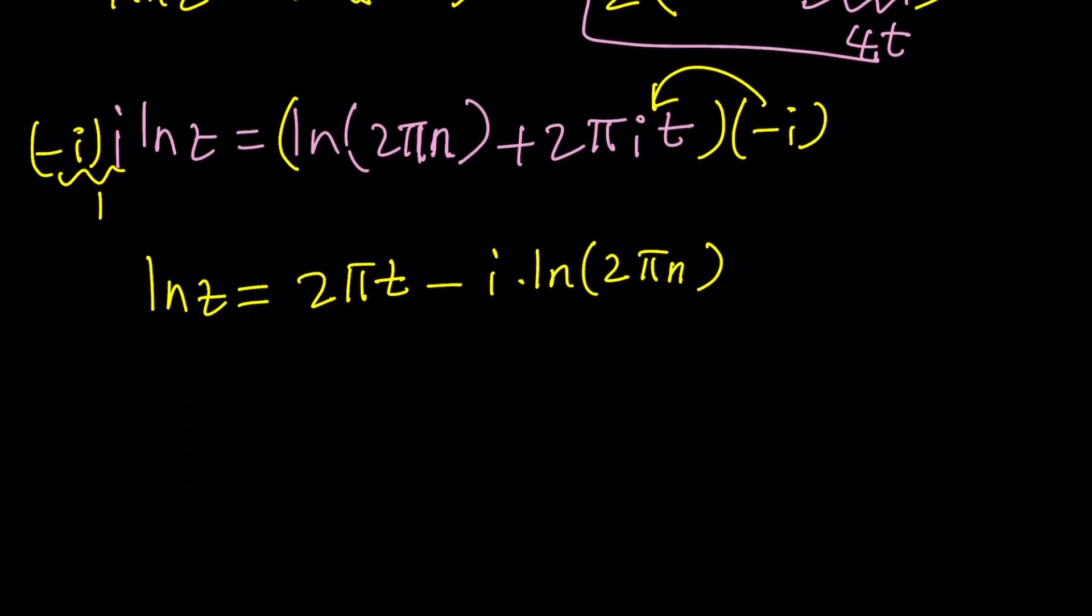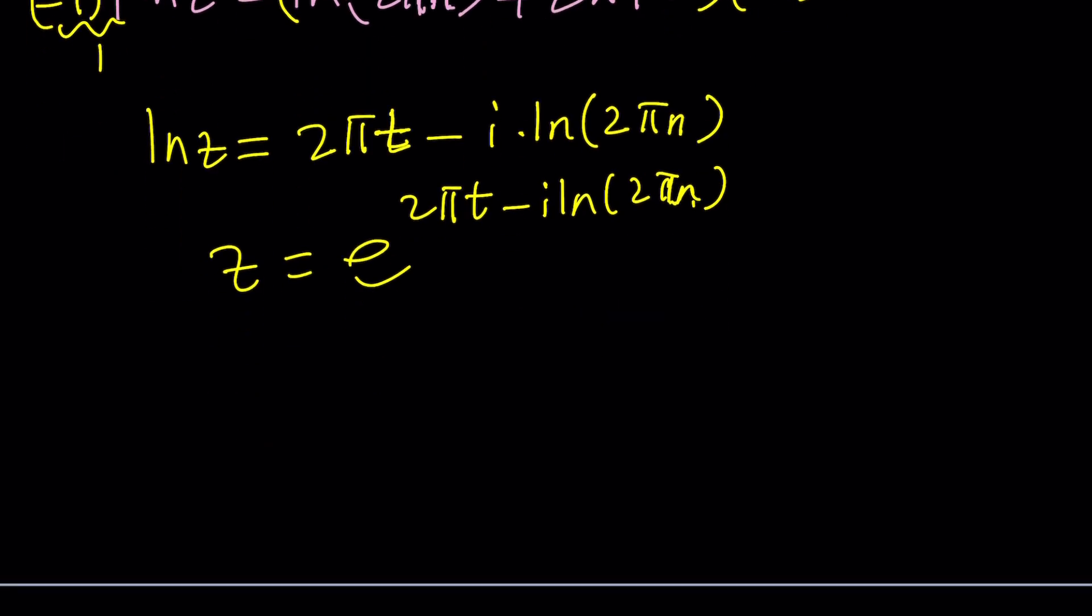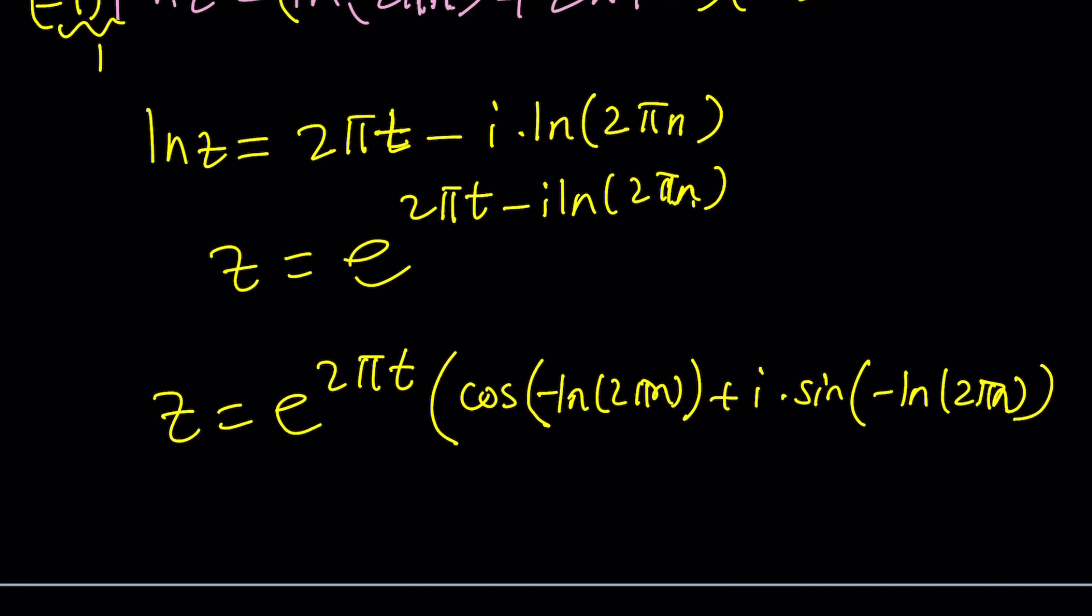So we're going to start with 2 pi t and then minus i times ln 2 pi n. And since we're looking for z, we're going to do e to the power of both sides. And that's going to be e to the power of 2 pi t minus i ln 2 pi n. And obviously this has a meaning. We can write this as follows. E to the 2 pi t is the modulus. And we have our complex number in standard form cosine of negative ln 2 pi n plus i times sine of negative ln 2 pi n. And that should be the solution for n positive.